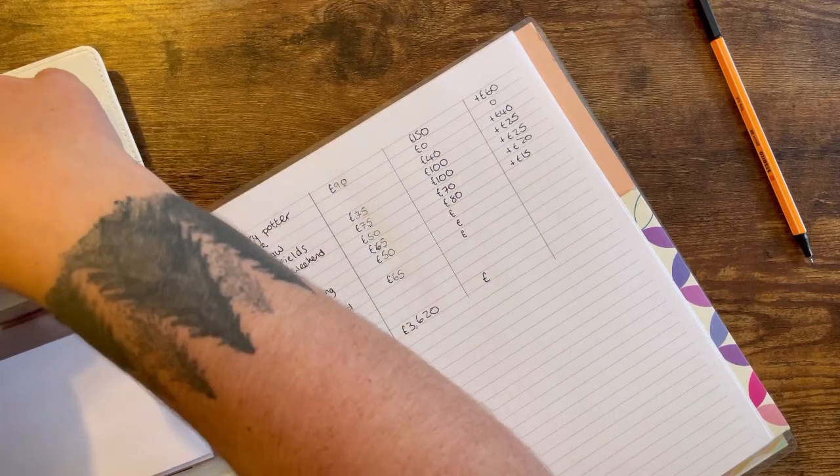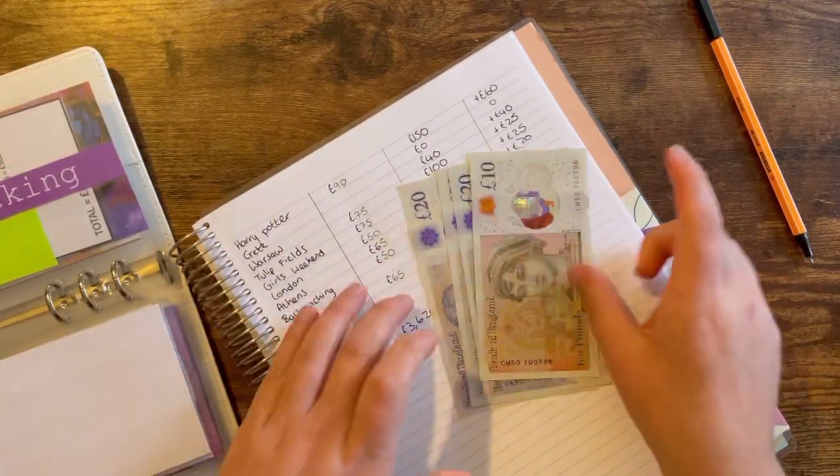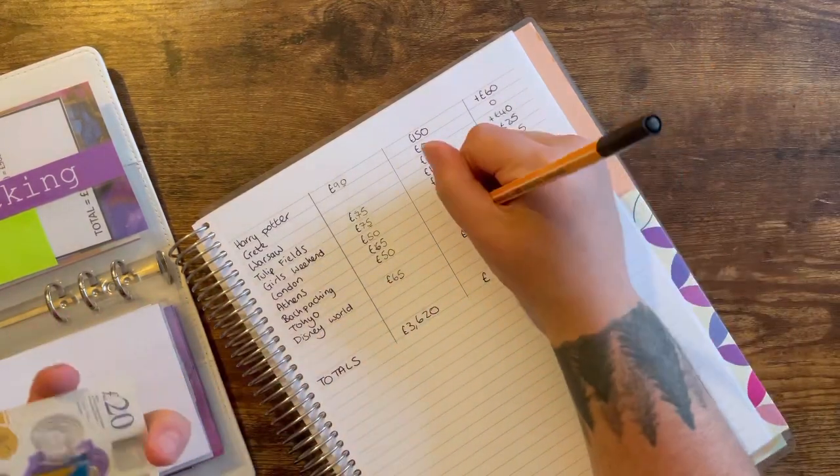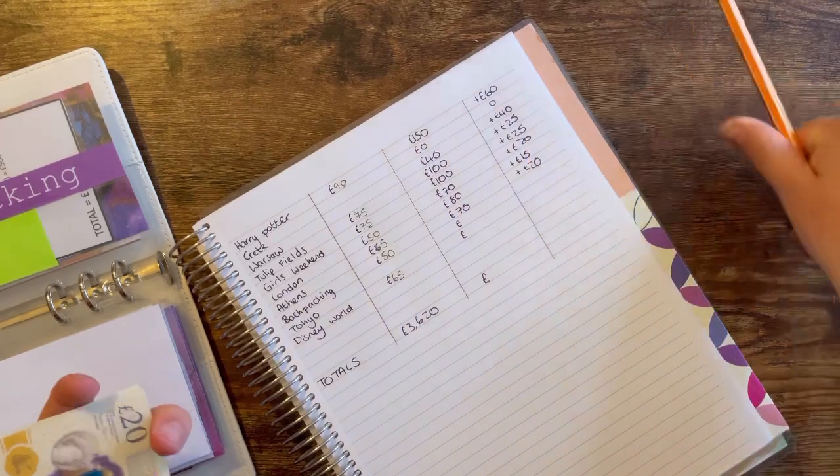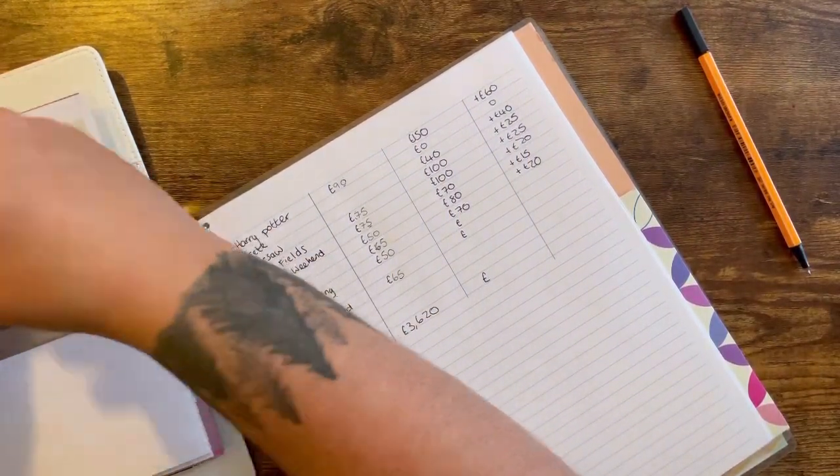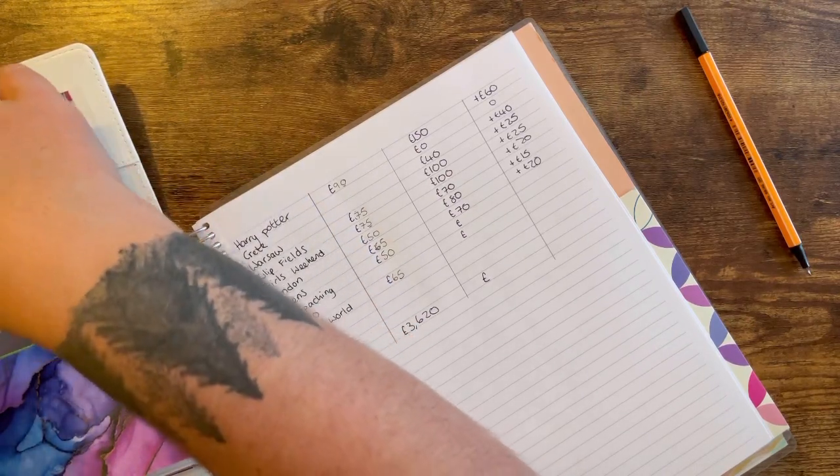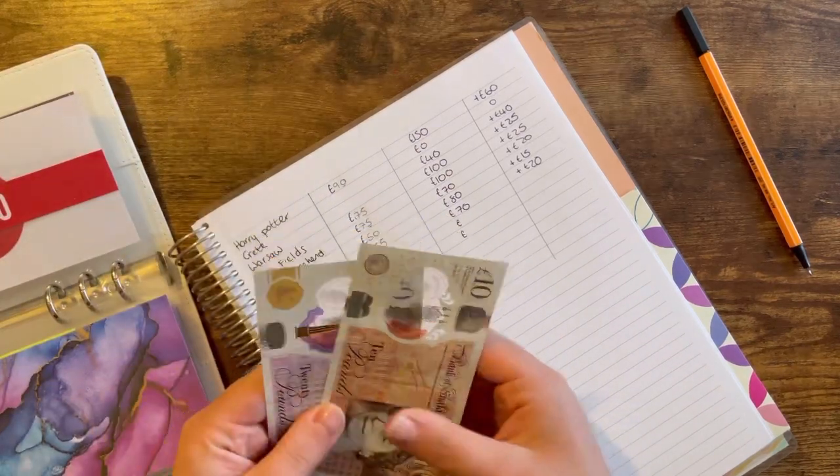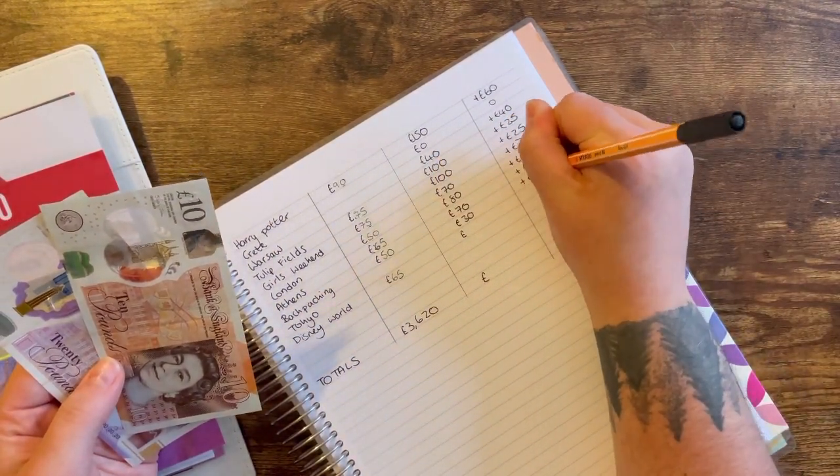Backpacking has 70, which is a positive change of 20. Tokyo again is a new envelope because I really want to visit Tokyo some day. So that's 30, so that's a positive change of 30.